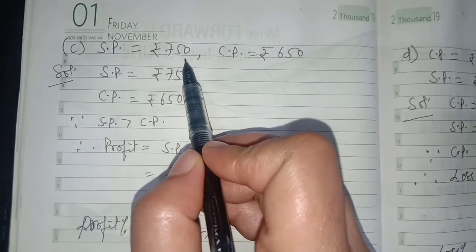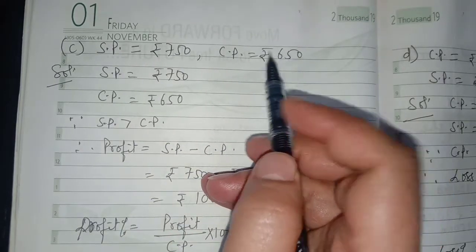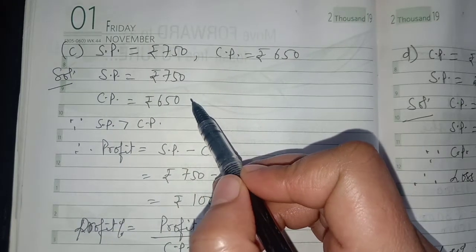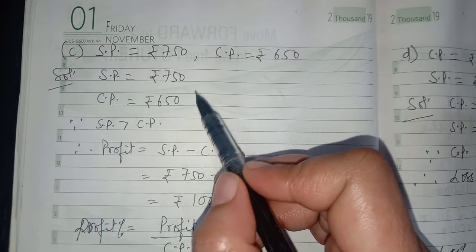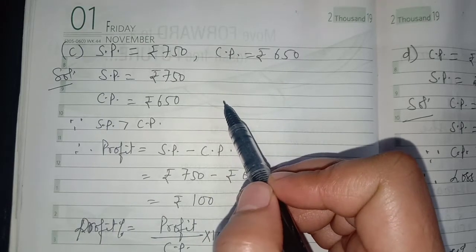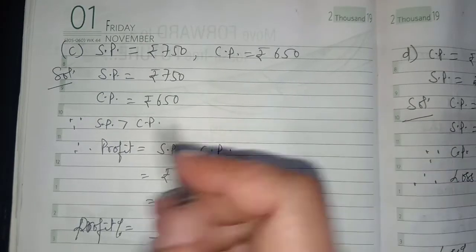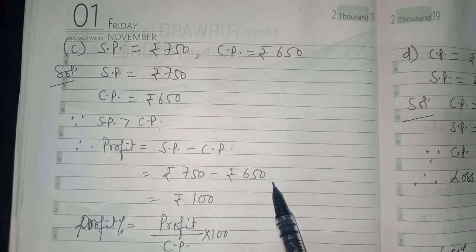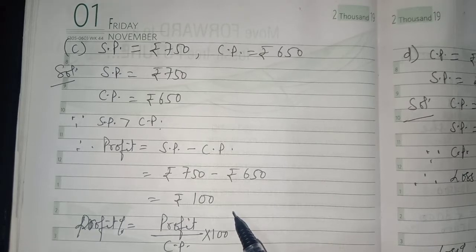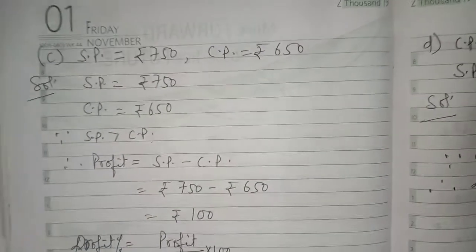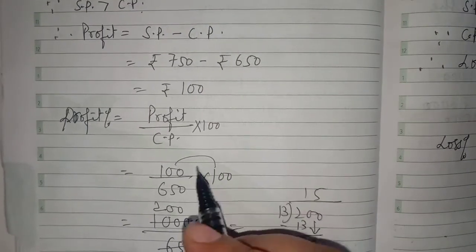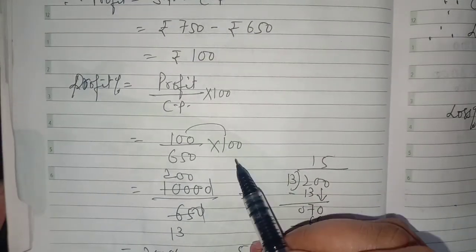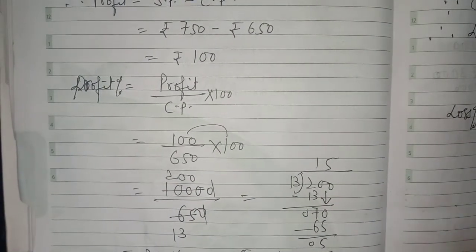In Part C, SP is rupees 750 and CP is rupees 650. Comparing them, SP is greater than CP, so there is a profit. Profit equals SP minus CP, which gives rupees 100. After finding the profit, we find Profit Percent = (Profit / CP) × 100.